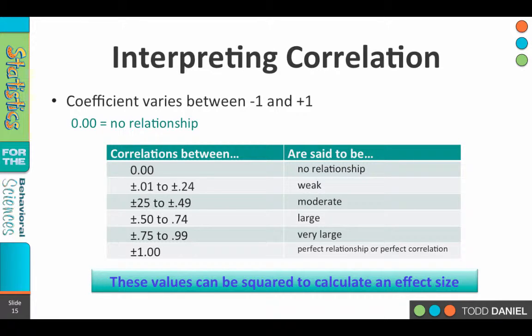Now we can interpret our correlational coefficients in a variety of ways. The simplest would be to use these guidelines. Now the downside of using these general guidelines is that they can be misleading and we shouldn't rely upon them, especially when numbers are right next to the cutoff. So if it's a 0.24 compared to a 0.26, those are not really all that different, even though one would be in the weak category and the other would be in the moderate category.